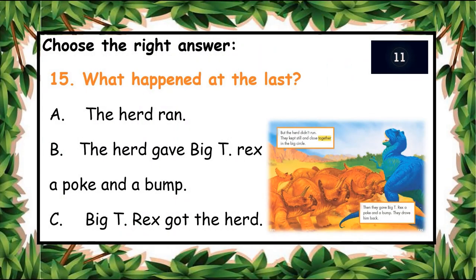The next question: what happened at the last? A: The herd ran, B: The herd gave Big T-Rex a poke and a bump, C: Big T-Rex got the herd. You have ten seconds to answer. B: The herd gave Big T-Rex a poke and a bump. Let's see — yes, B is the right answer!